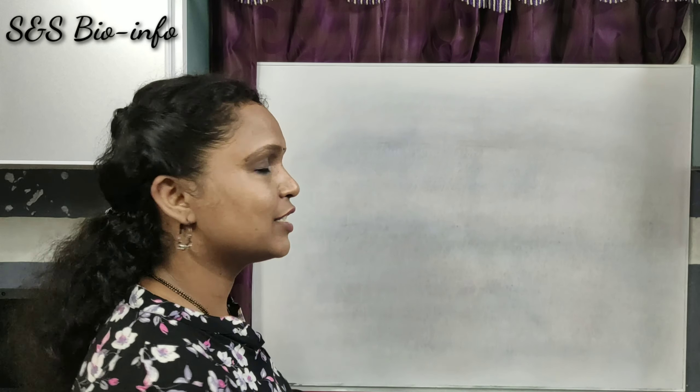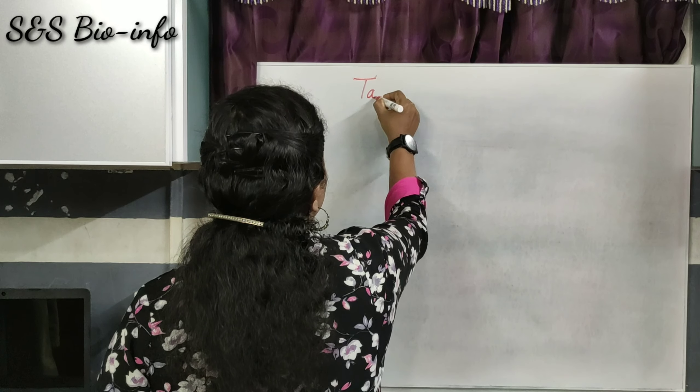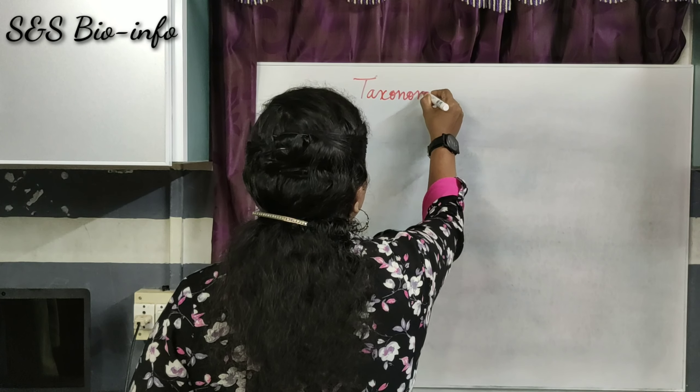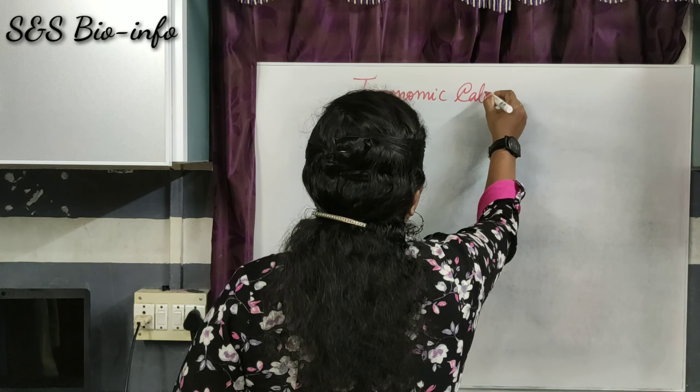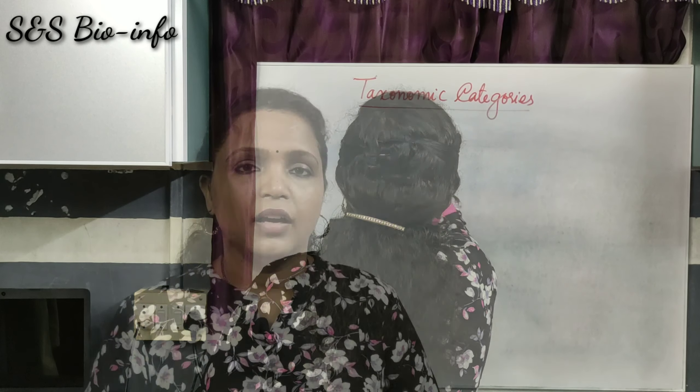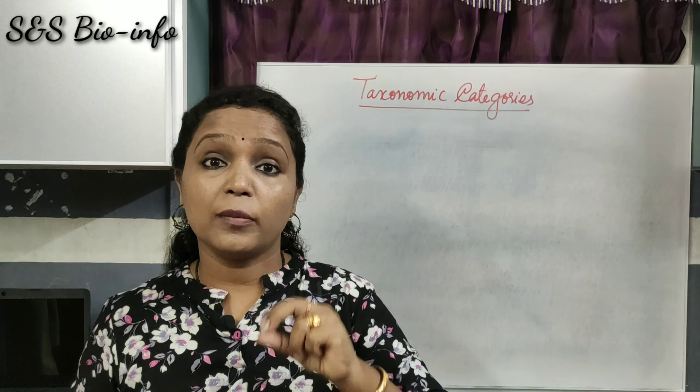Organisms are arranged in various levels according to their features. Today's topic is taxonomy categories. The various grouping levels or ranks in the classification are known as taxonomy categories. In classification, the taxonomy categories are arranged in ascending order.